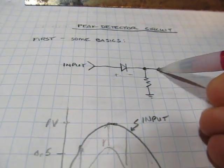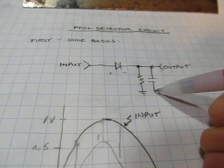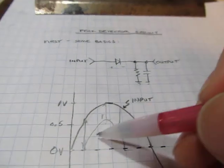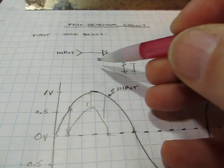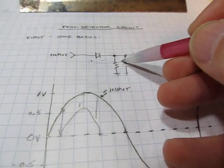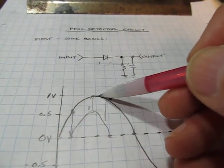Well, the way we turn that into a peak detector is we add a capacitor right here. Because now what will happen is as that voltage rises up, we're still going to get kind of that following, because the capacitor is going to get charged up through that diode. But once this voltage starts to fall...